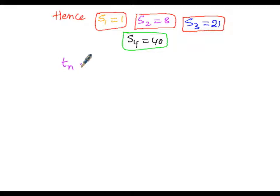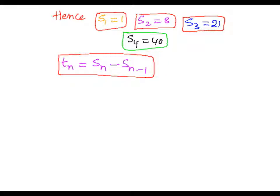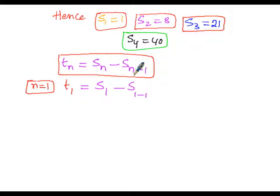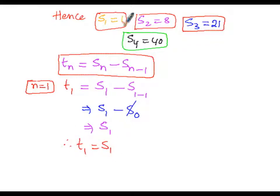To find the nth term, we use t(n) = S(n) - S(n-1). For the first term at n=1: t(1) = S(1) - S(0). Since S(0) is negligible, t(1) = S(1) = 1. So the first term is 1.